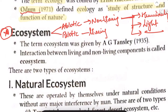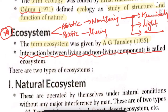An important question seen in many previous years' exams is: who gave the term 'ecosystem'? The term ecosystem was given by A.G. Tansley — don't forget Tansley. Tansley coined the term ecosystem in 1935. Ecosystem refers to the interaction between living and non-living components.